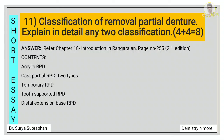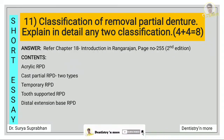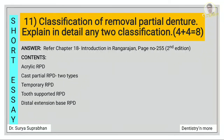Classification of RPD — explain in detail any two classifications. This is a bit of a controversial question. When you see it, you might think you have to write about Kennedy or Applegate classification, but no — you first have to write about the types of RPD: acrylic RPD or cast partial RPD. Cast partial RPD can be divided into two types. Then write about temporary RPD, tooth-supported RPD, and distal extension-based RPD, and explain in detail about any two classifications.